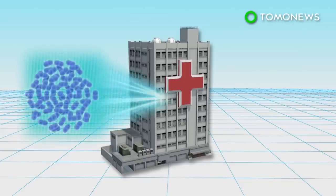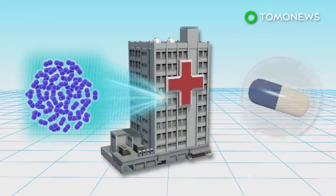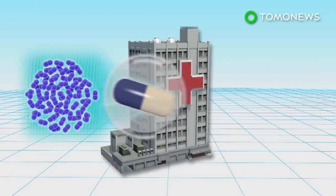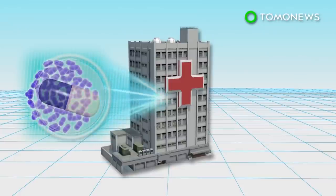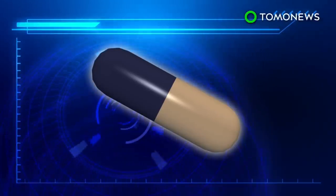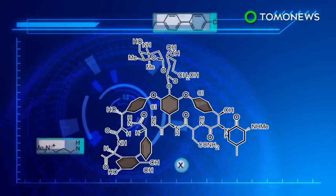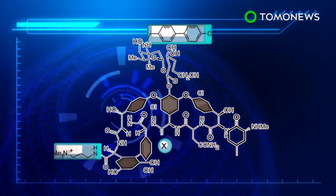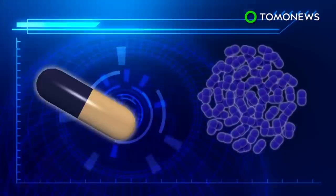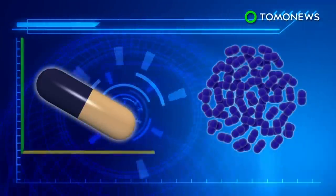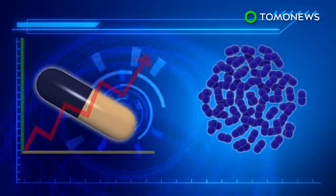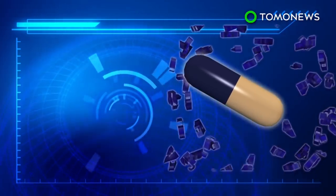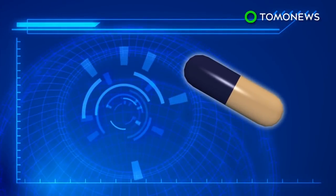Vancomycin-resistant enterococci, otherwise known as VRE, is commonly found in hospitals. It can cause dangerous infections and is resistant to the antibiotic vancomycin. Scientists have modified the vancomycin drug to overcome this resistance, and added two ways to kill the bacteria. The modified vancomycin is reportedly a thousand-fold more powerful than before, and has been able to kill the VRE bacteria in lab tests.